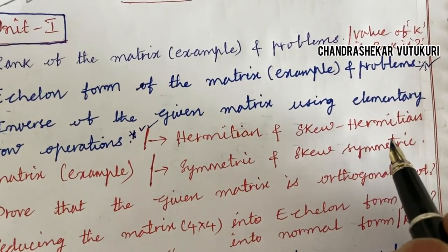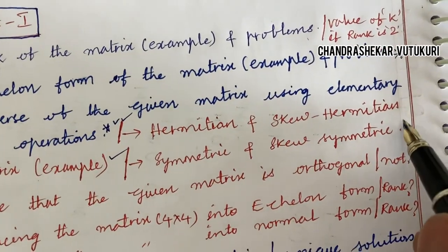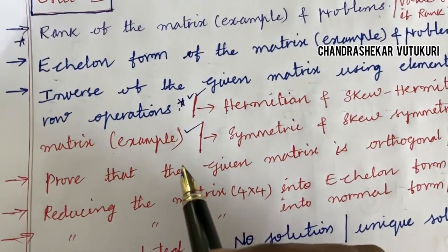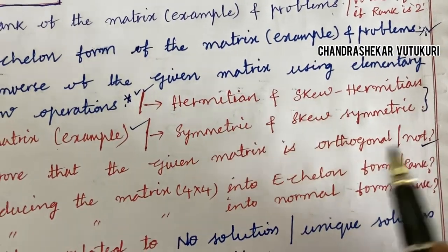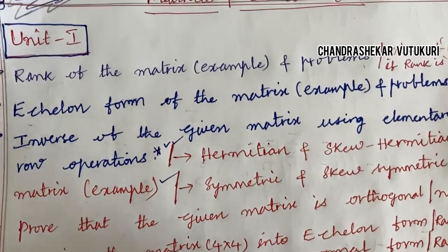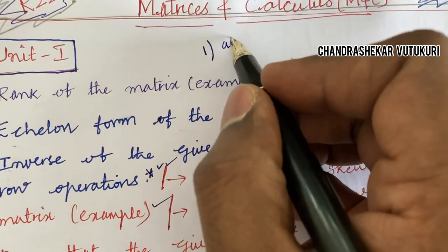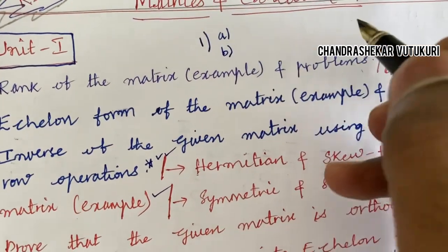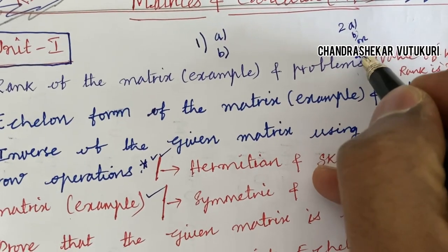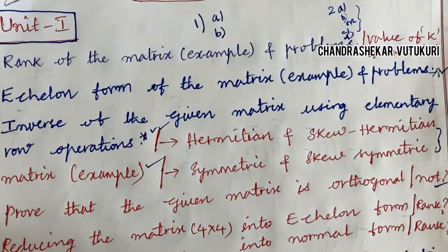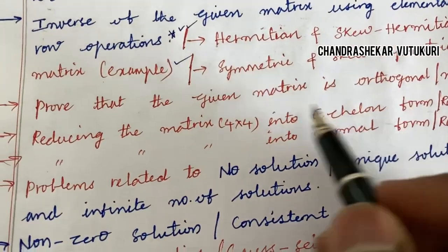Define Hermitian and skew-Hermitian matrix along with an example. Symmetric and skew-symmetric matrix is a short question. Prove that the given matrix is orthogonal or not — that may also be a short question. From Unit 1, you are going to get two short questions — question numbers 1A and 1B — and long questions are 2A, B or C, D. I am going to discuss the A, B and C, D questions now.